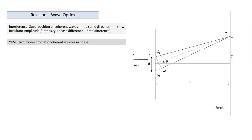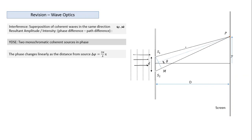In the normal case, the two sources are not only coherent — at the source, they are in the same phase. The phase difference is not just constant but is zero at the source. As light travels, in the case of a wave, phase changes linearly with distance. At a distance of lambda, phase changes by 2π.